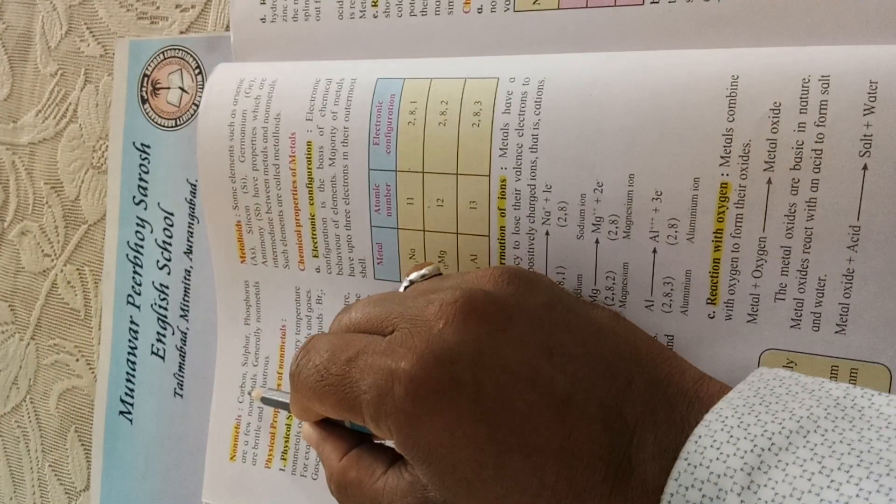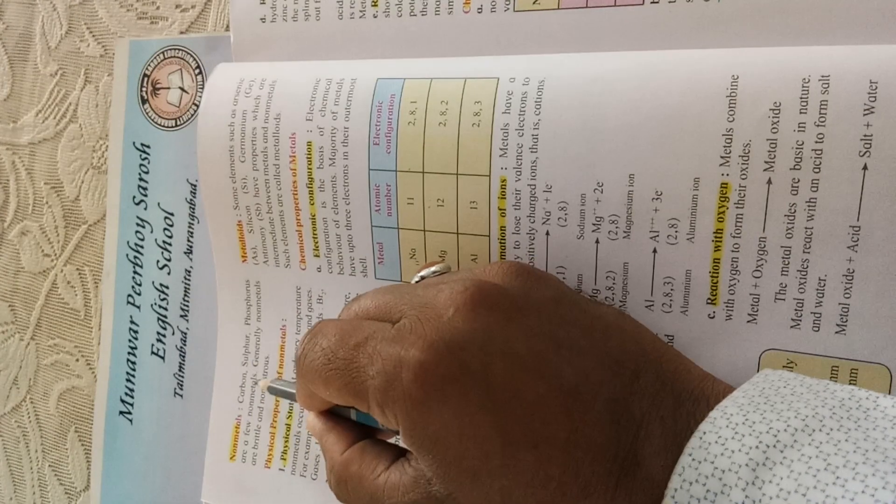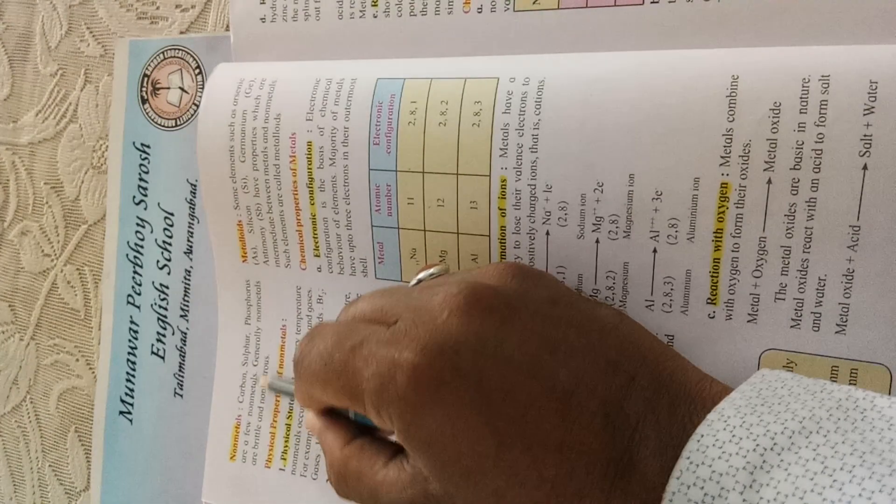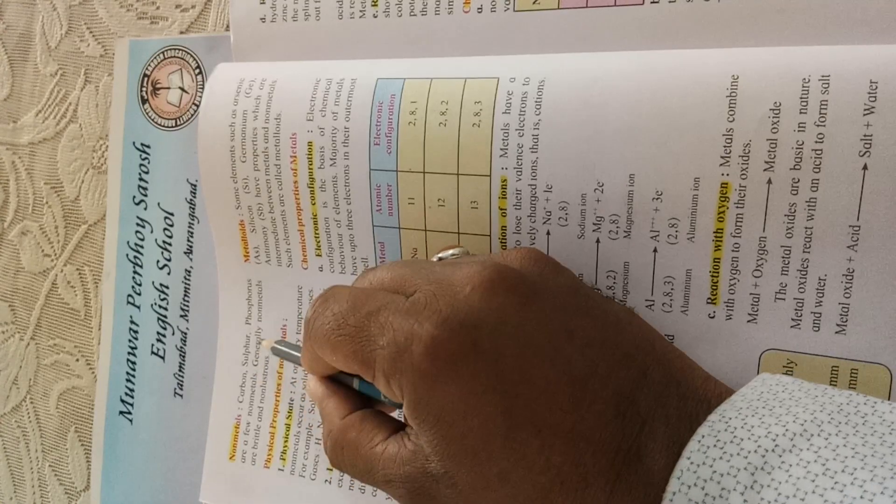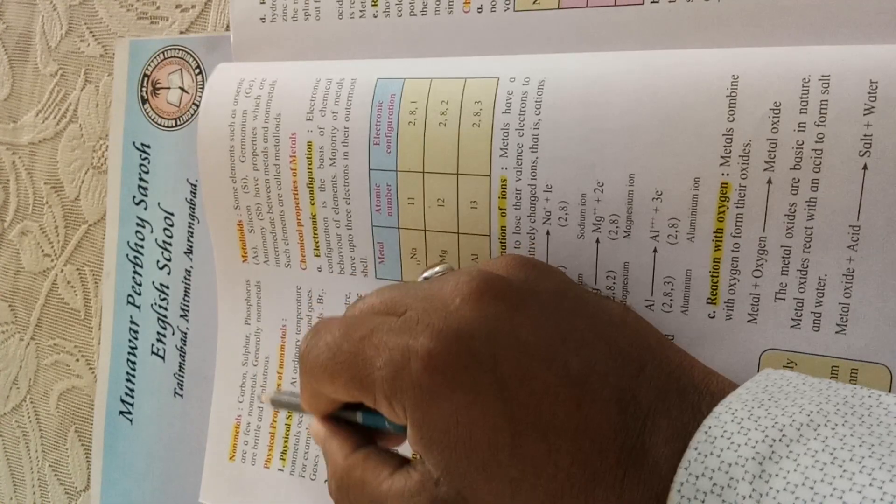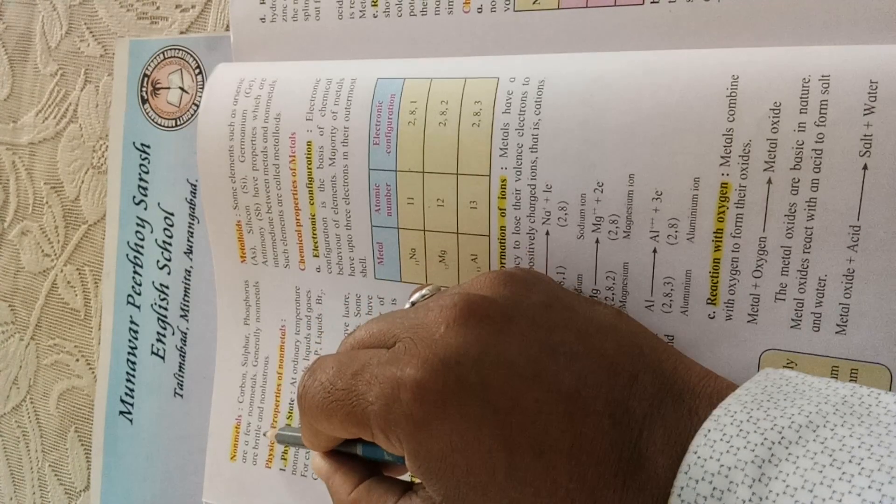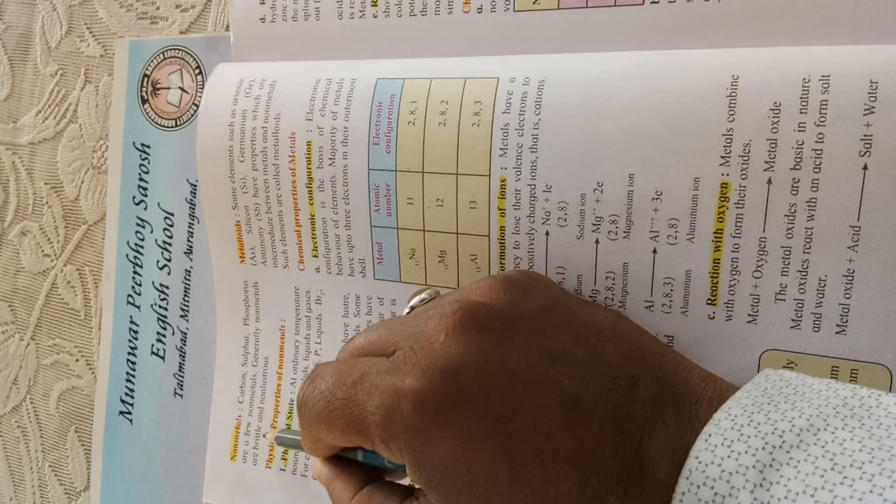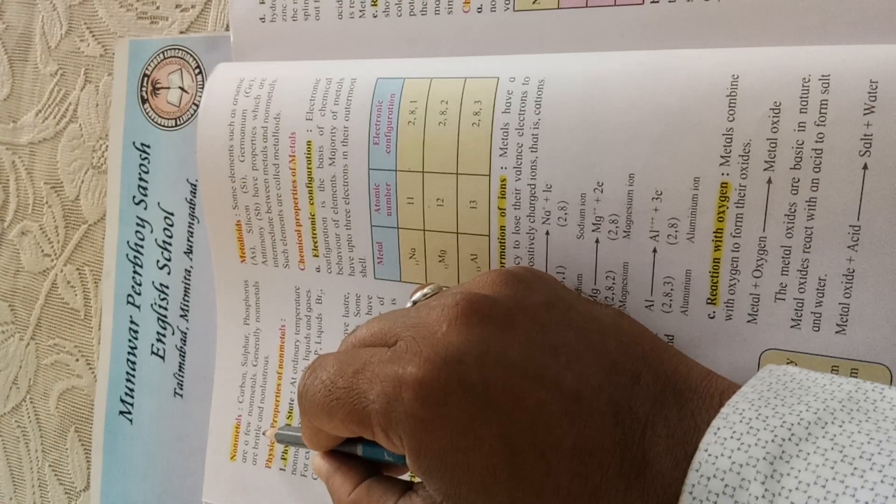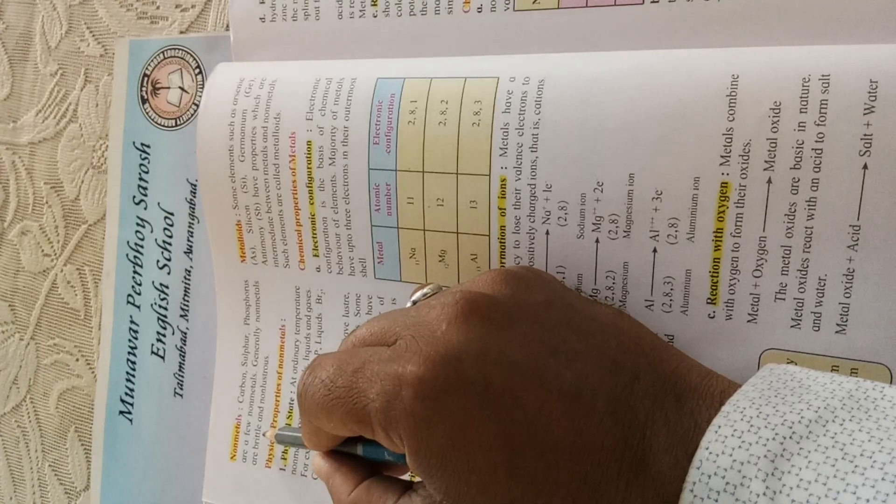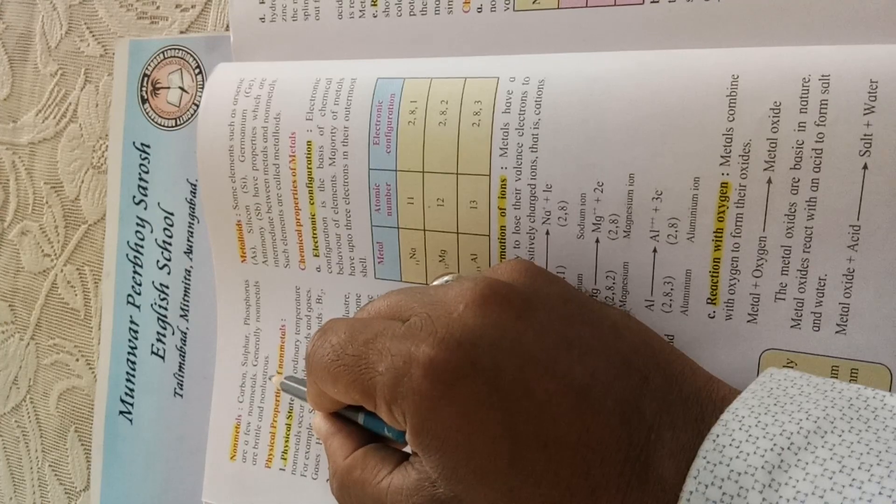Carbon, sulphur, and phosphorus are a few examples of nonmetals. Generally, nonmetals are brittle and non-lustrous—these are two important characteristics. Brittle means they are easily breakable, and non-lustrous means they do not shine like metals.